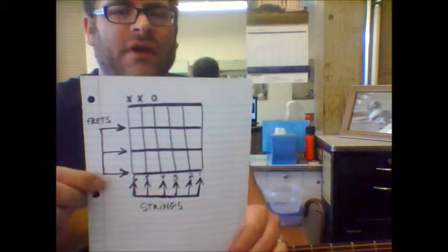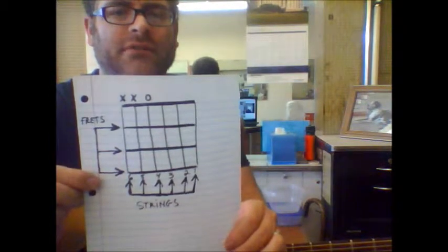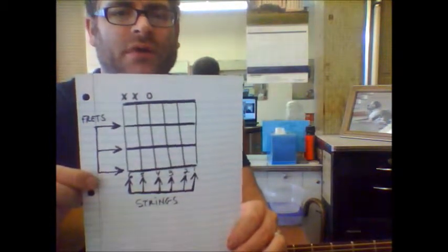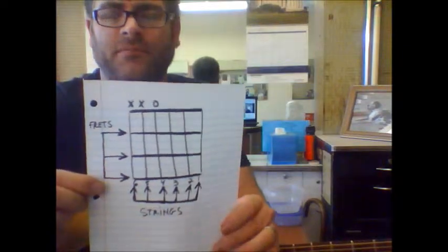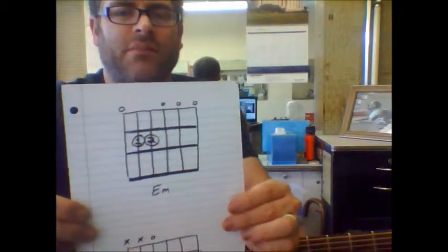So I've got a few examples here of some chords that I wrote out that you can see by example how to read the chord chart. So again, let's start with the top one, which is E minor.